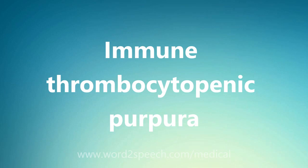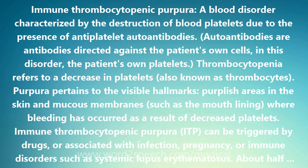Immunothrombocytopenic purpura — a blood disorder characterized by the destruction of blood platelets due to the presence of antiplatelet autoantibodies. Autoantibodies are antibodies directed against the patient's own cells.